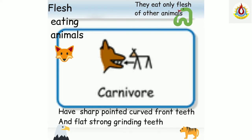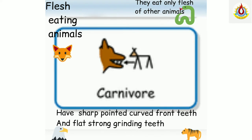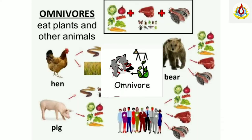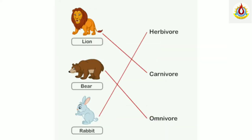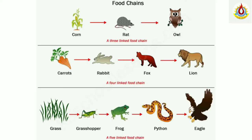Carnivore animals are the flesh-eating animals. They have sharp, pointed, curved front teeth and flat, strong grinding teeth to eat the flesh and bones. Omnivorous animals are plant and flesh-eating animals. See in the diagram: lion is a carnivore, bear is an omnivore, and rabbit is a herbivore animal. All animals depend upon plants, directly or indirectly.